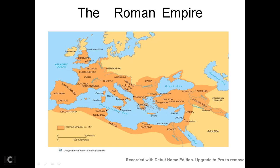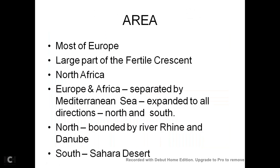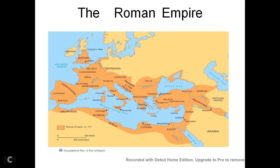Only this coastal area — here you see Numidia and Egypt — this area is included in the Roman Empire, the northern part. Europe and Africa are separated by the Mediterranean Sea. The empire expanded in all directions — north and south. The northern boundary was marked by two rivers: Rhine and Danube. The southern side was covered by the Sahara Desert. Here you can see Africa, and on its northern side is the Sahara Desert area. These are the two rivers: Rhine and Danube.